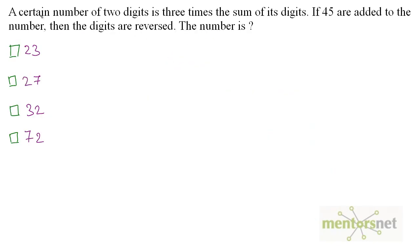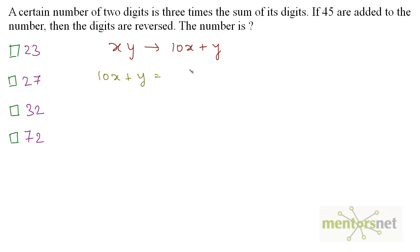Let us move on to the second question. A certain two-digit number is 3 times the sum of its digits. If 45 is added to the number then the digits are reversed. The number is of two digits x and y, so its value is 10x plus y. This equals 3 times the sum of its digits, so 10x plus y equals 3 times x plus y, which gives 3x plus 3y.